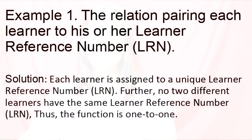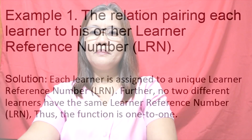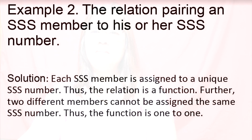Example number one: the relation pairing each learner to his or her Learner Reference Number (LRN). Solution: each learner is assigned a unique LRN. Further, no two different learners have the same LRN. Thus, the function is one-to-one. Second example: the relation pairing an SSS member to his or her SSS number. Solution: each SSS member is assigned a unique SSS number. Thus, the relation is a function. Further, two different members cannot be assigned the same SSS number. Thus, the function is one-to-one.